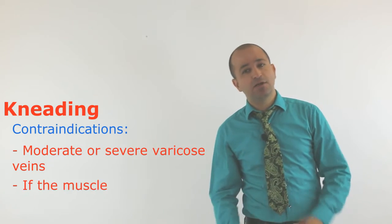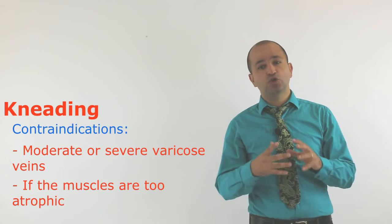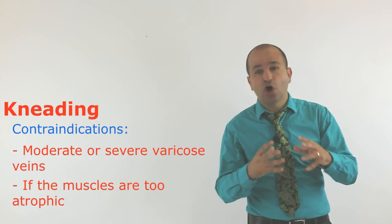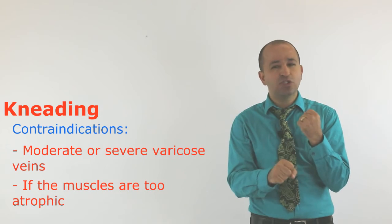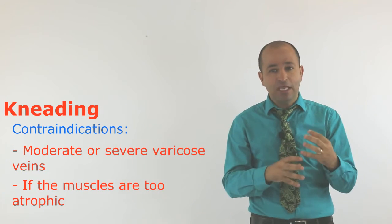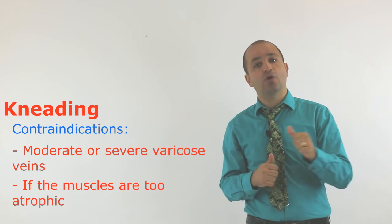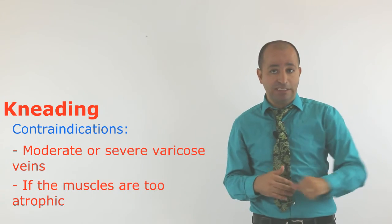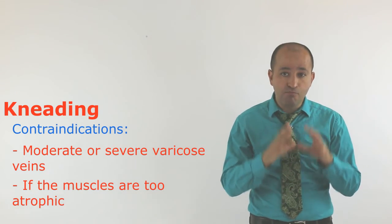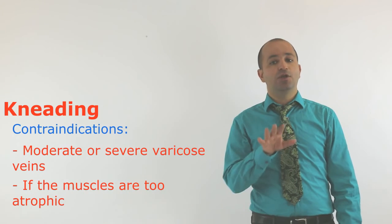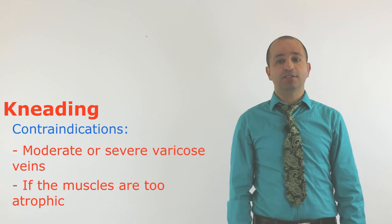Number two, if the muscle under your finger is too atrophic or atonic, meaning the muscle is so tiny, so thin and so weak, then you are going to be careful when you perform kneading, especially deep kneading, because you might damage the area.